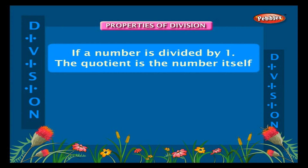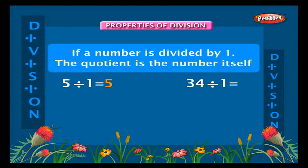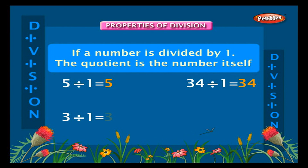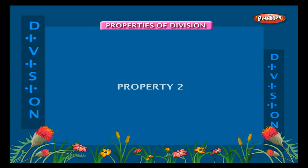Properties of division. Property one: division of a number by one. If a number is divided by one, the quotient is the number itself. For example, five divided by one is equal to five, thirty-four divided by one is equal to thirty-four, three divided by one is equal to three, seven divided by one is equal to seven, and so on.